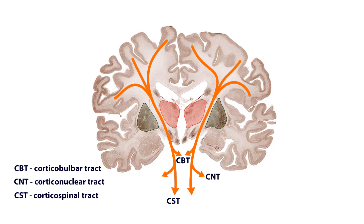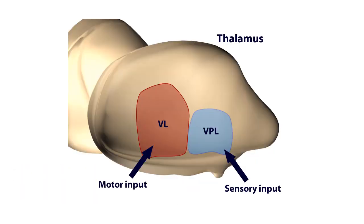Afferent fibers mostly rise from the thalamus. Sensory fibers from the anterolateral tract and dorsal columns project to the ventroposterolateral nucleus of the thalamus, or VPL. The thalamus also receives motor inputs from the basal nuclei and the cerebellum via the ventrolateral nucleus, or VL. Visual and auditory fibers project to the geniculate nuclei, part of the metathalamus.